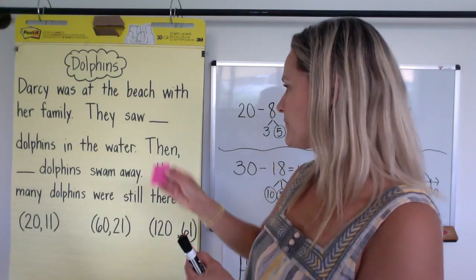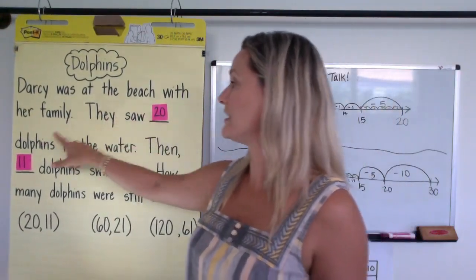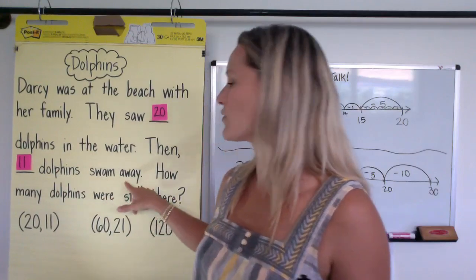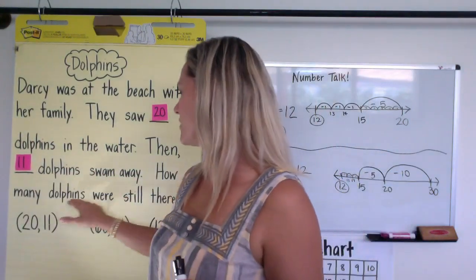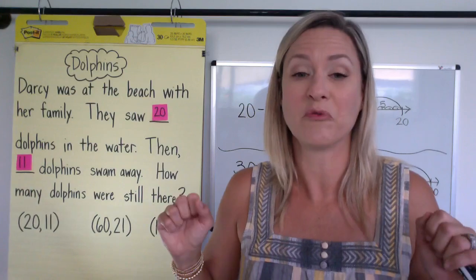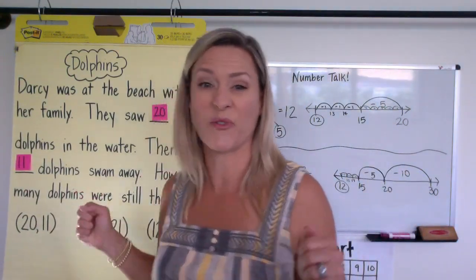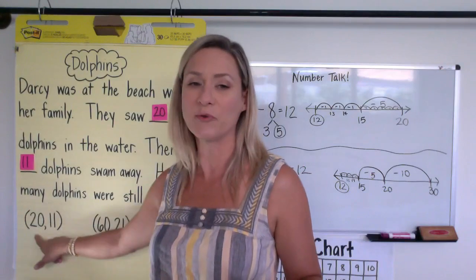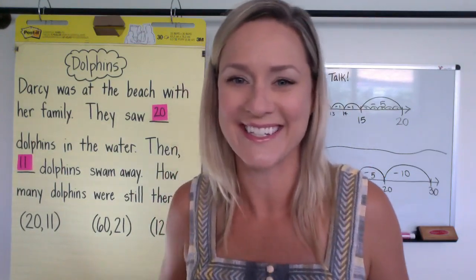We're going to try it out with 20 and 11. So Darcy was at the beach with her family. They saw 20 dolphins, that's a nice size pod. They saw 20 dolphins in the water. Then 11 dolphins swam away. So imagine 20 dolphins and then 11 dolphins swimming away. How many dolphins were still there? We have to choose our Just Right number set. Now remember, you want to focus on having a really good solid strategy before you go on to the hardest number sets. This strategy set right here is for first grade, and that really helps us develop our strategies, the way we're solving. And if you feel like, hey, I have a really good strategy here, then you can move on. It's up to you now. Go check in with your teacher and see how you should turn this in. See you next time. Bye.